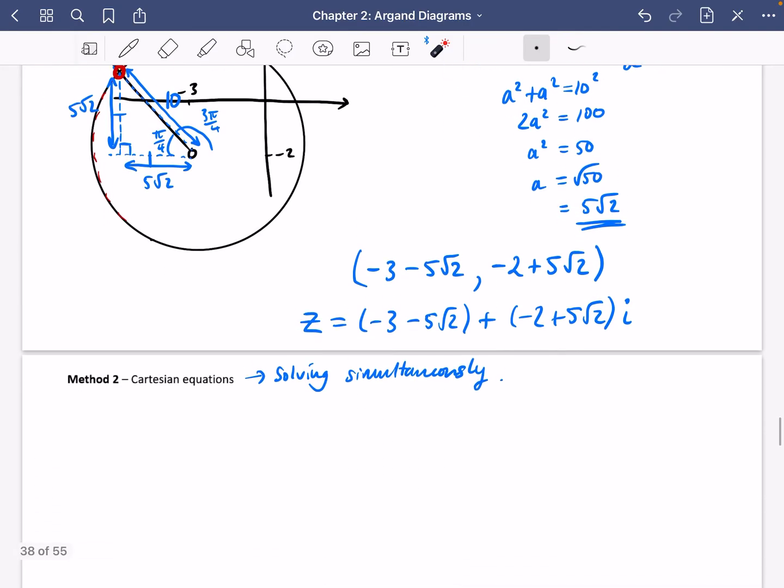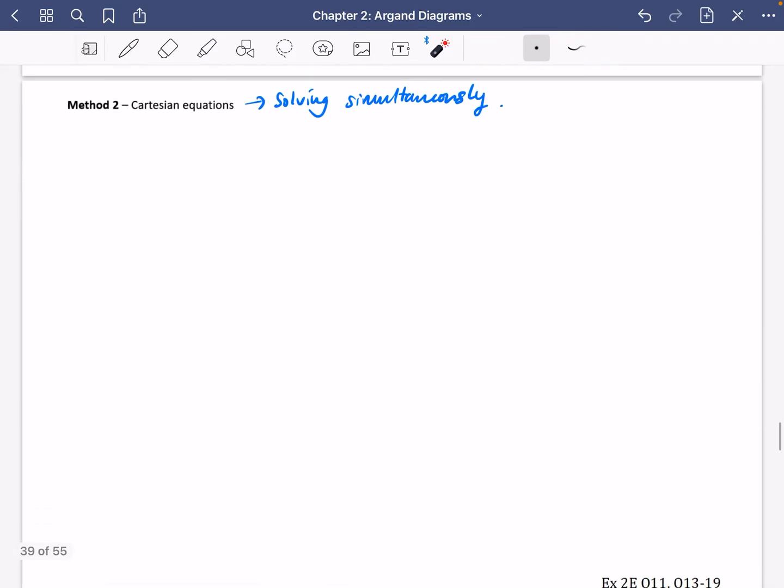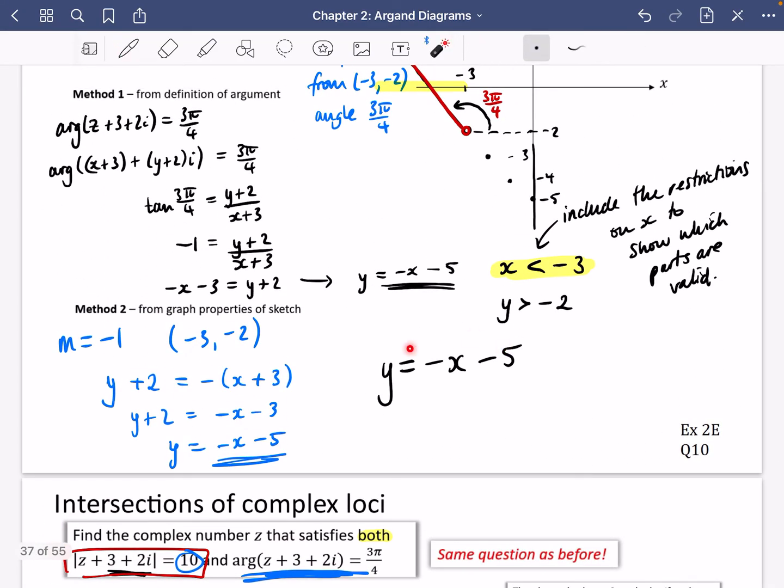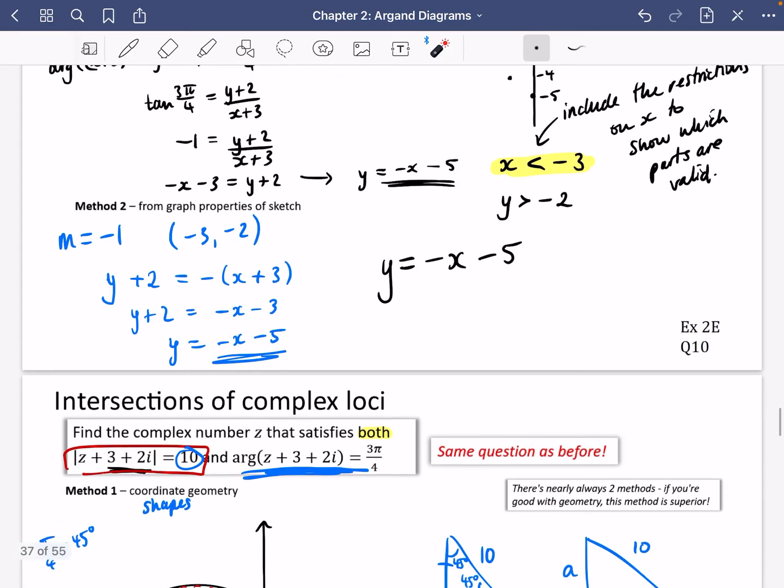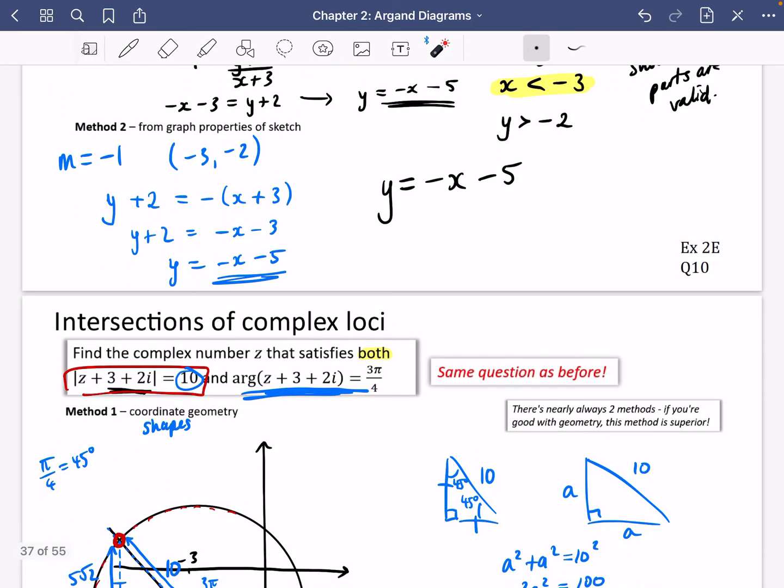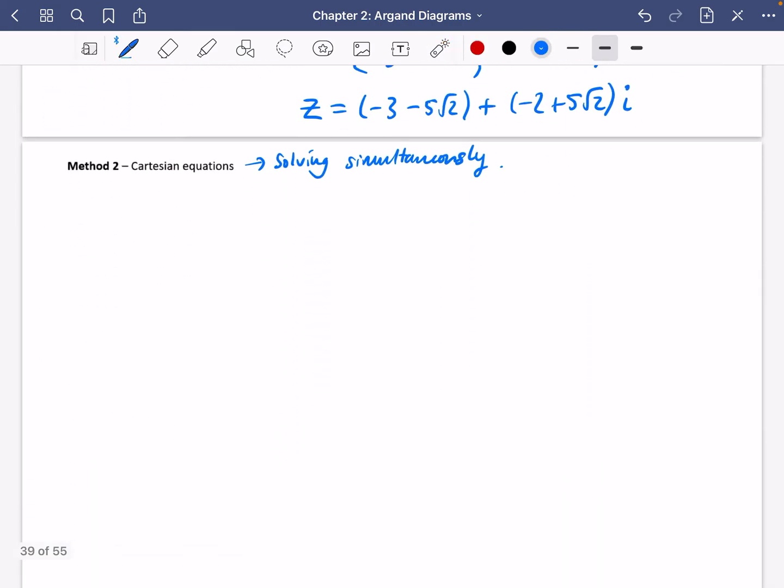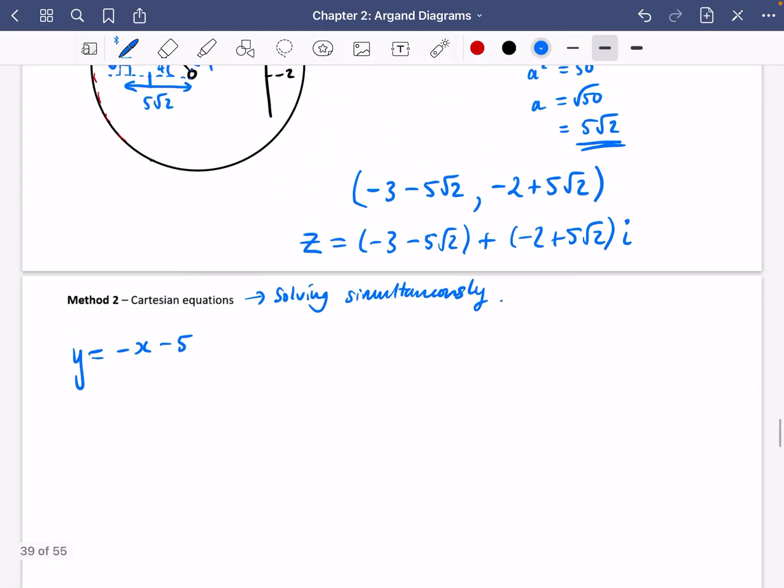So we're going to now try and do this using Cartesian equations, which I think is going to be a bit slower because you may have to work out this Cartesian equation and we're going to have to work out this Cartesian equation first. We have this one nice and easy, it's ready to go, but we're going to have to, I've made it a bit easier. If you didn't have it, you would have to work it out.